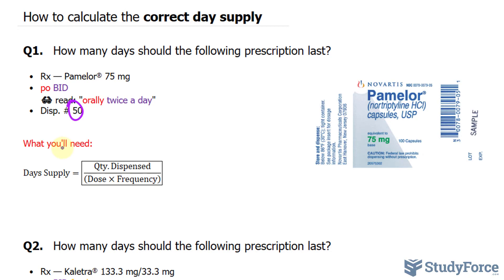The formula that we'll be using is the one shown underneath. The quantity to dispense over the dose times the frequency gives you the day's supply.